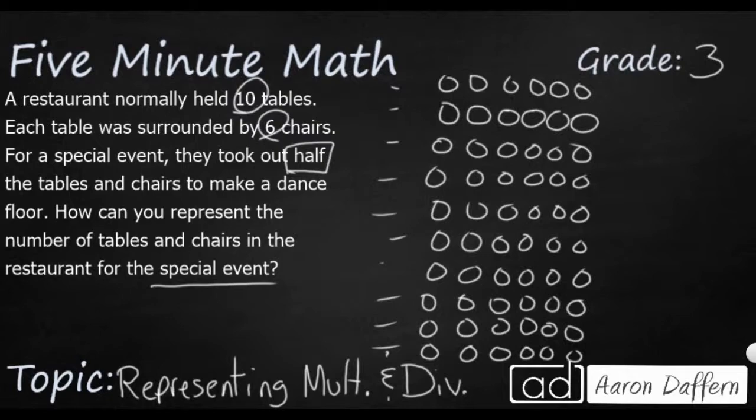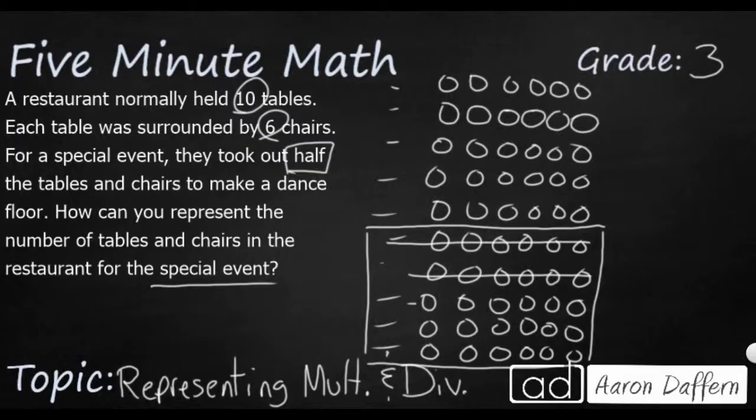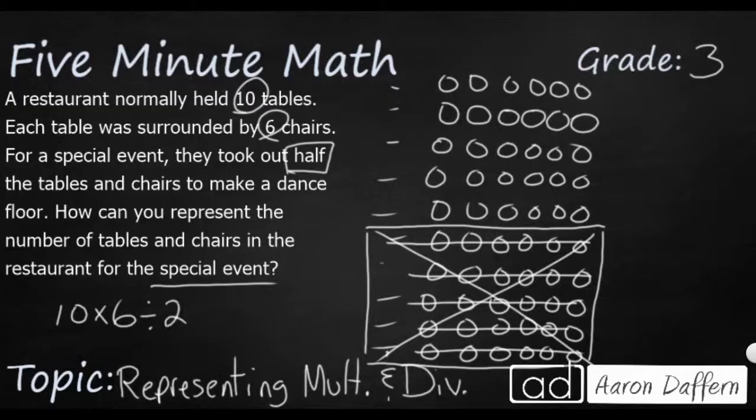Well, I've got one, two, three, four, five. So what I'm going to do is put a box around this half right here and I'm just going to draw lines through it. You can either draw lines through it or you can just draw a big X if you want to, because that's half of it. That's dividing it by two. So what I did was I did 10 tables times six chairs each, but then I took out half. I divided it by two and now that's going to get me, let's see, I've got 6, 12, 18, 24, 30. I've got 30 chairs. So you can represent it with an array like this. You can make your array, cross it out, or you can write an equation to get your answer of 30 chairs.